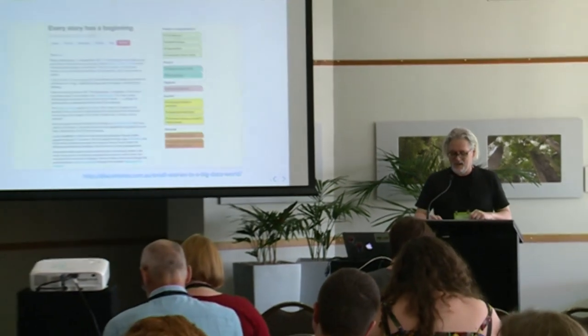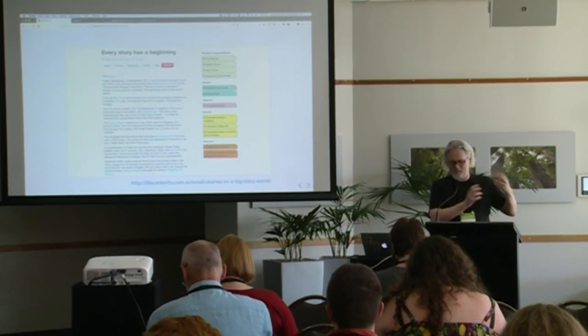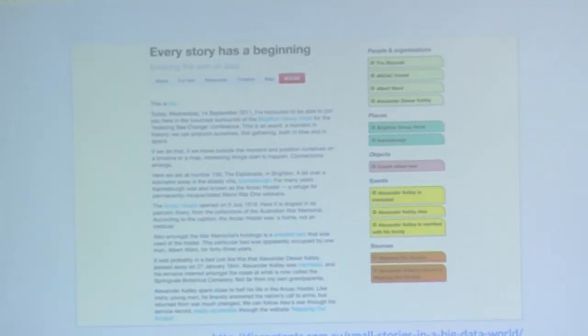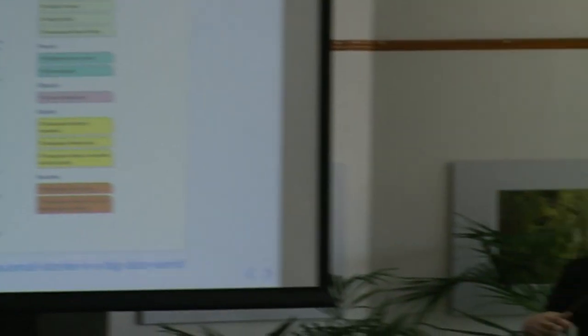Linked open data is about making connections — connections between things like relationships between people, or between a person and a place, the subject of a photograph, all expressed in a nice structured standard form. That's the linked part. But there's also connections between the people and organisations that create linked open data and those who use, enrich or explore that data — that's the open part, the shareability.